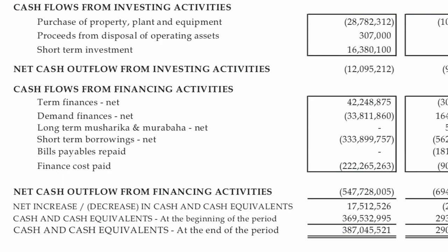And then finally, the last category is cash used or provided by financing activities. So if a company has issued more stock, you'll see that in this section. Or for a bank, you'll see changes in the deposit accounts in this section.